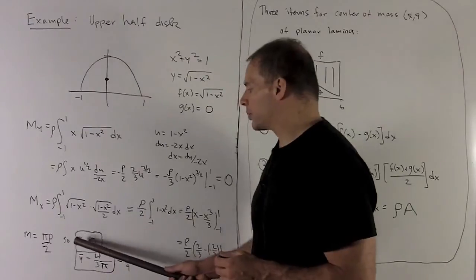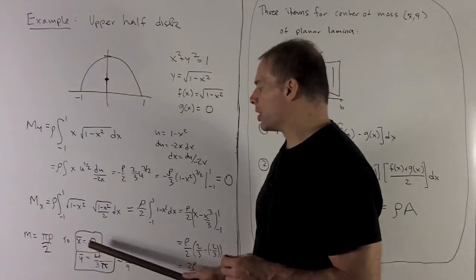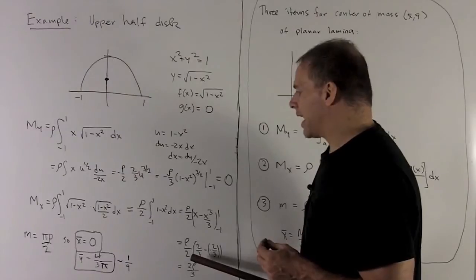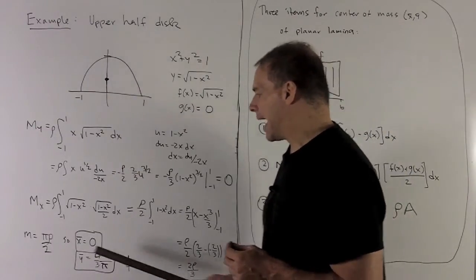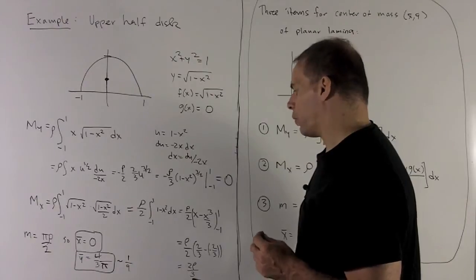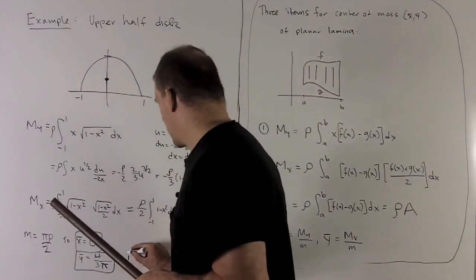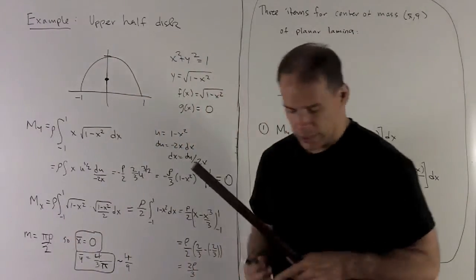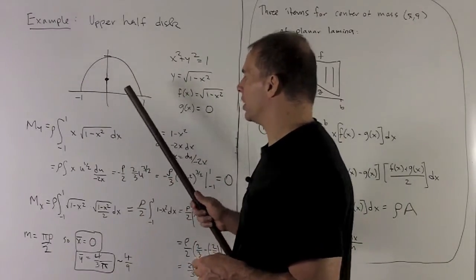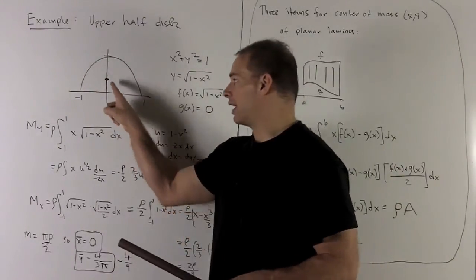We stick our points in. So x-bar is going to be moment in y, it's the opposite letter, divided by total mass. Well this was 0, so x-bar is going to be 0. For my y-bar, I take the moment in x, opposite letter, and then I divide by the total mass. So I have 2 rho over 3 divided by pi rho over 2. That 2 is just going to move to the top to give me a 4, and then I'm looking at 4 over 3 pi. The rhos are going to disappear. So this is roughly 4 ninths, and that's roughly a half. So we expect our center of mass to be slightly below the half point here. It's going to be 0 in this direction, and then a little bit less than a half in this direction. So our center of mass is there. So if I pull this off the board and I want to balance it, I have to stick my finger right there.